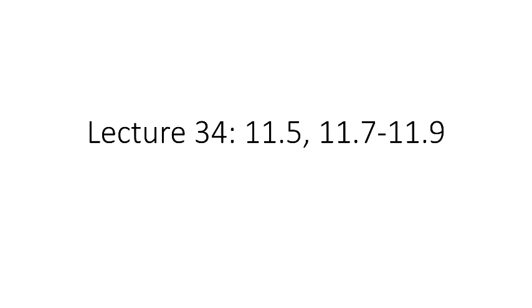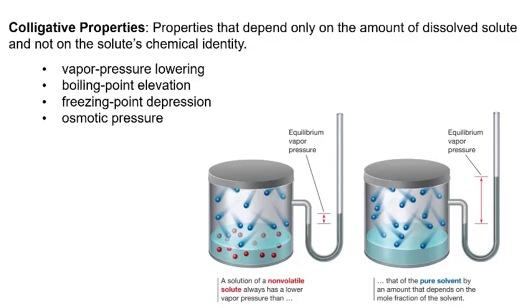This is Lecture 34 on Chapter 11.5, 11.7 through 11.9 on colligative properties. Colligative properties are properties that depend only on the amount of dissolved solute and not on a solute's chemical identity. Some examples of these colligative properties are lowering the vapor pressure, the elevation of boiling point, the depression of freezing point, and observable changes in osmotic pressure.